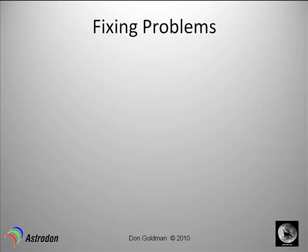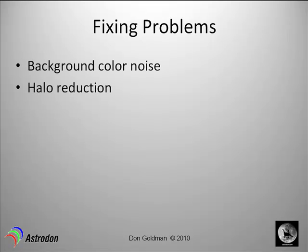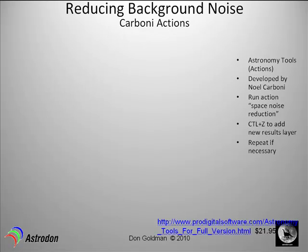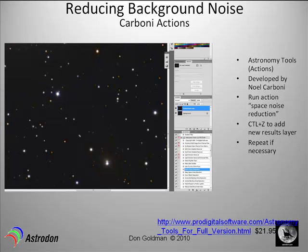What we're going to cover in the rest of this tutorial is background color noise, halo reduction, and oblong stars. Almost everyone has some type of color noise or splotches left over near the end of your processing. Here's an example — there's a blue splotch here and there's a blue splotch there.